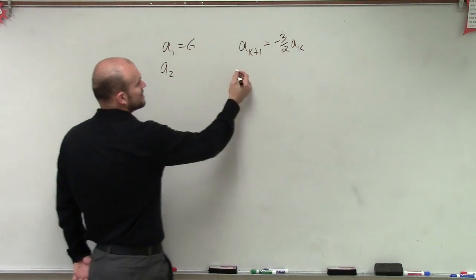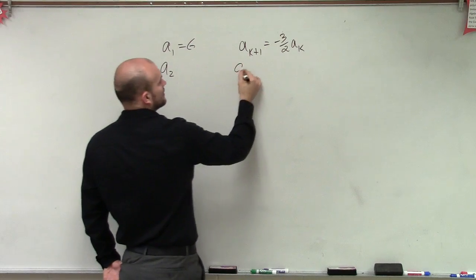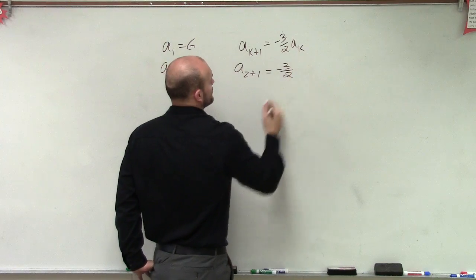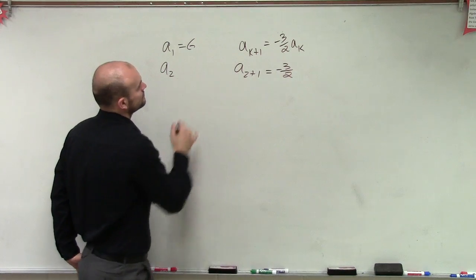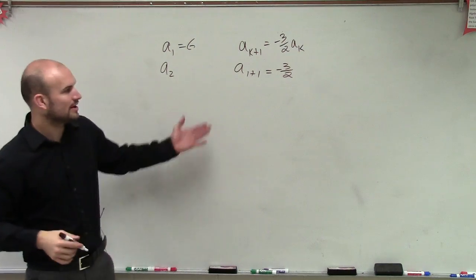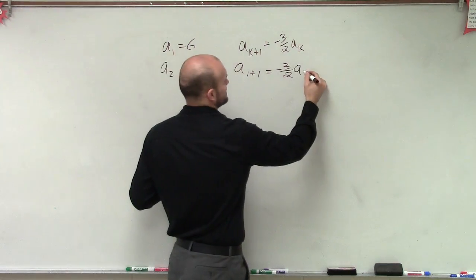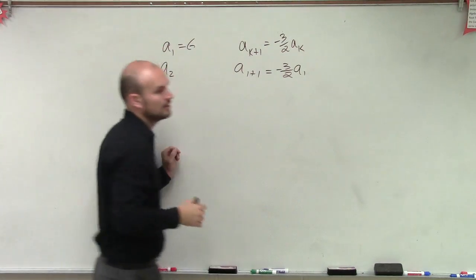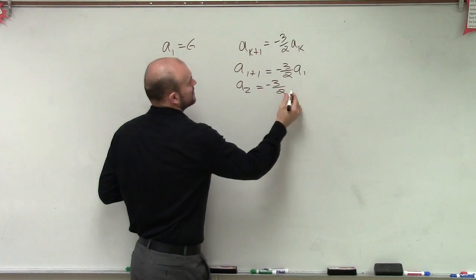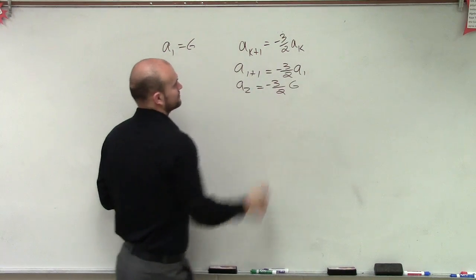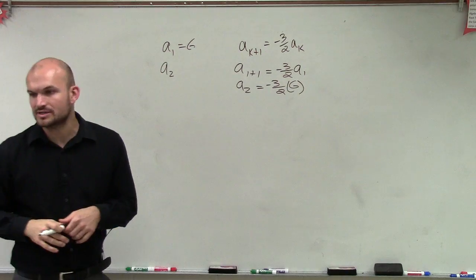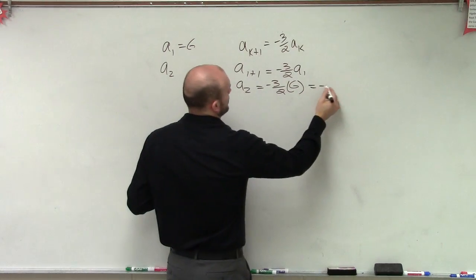So if we already know a sub 1, if I want to figure out what a sub 2 is, then I'll put a 2 in for my k. So I can say a sub 2 plus 1 equals negative 3 halves times... I'm sorry. Let's plug in 1, right? You plug a 1 in for there. So therefore, I can find a sub 1. Now we know that a sub 1 plus 1 is a sub 2 equals negative 3 halves times a sub 1, which is 6. Which in this case, you can see that negative 3 half times 2 is going to equal negative 9.